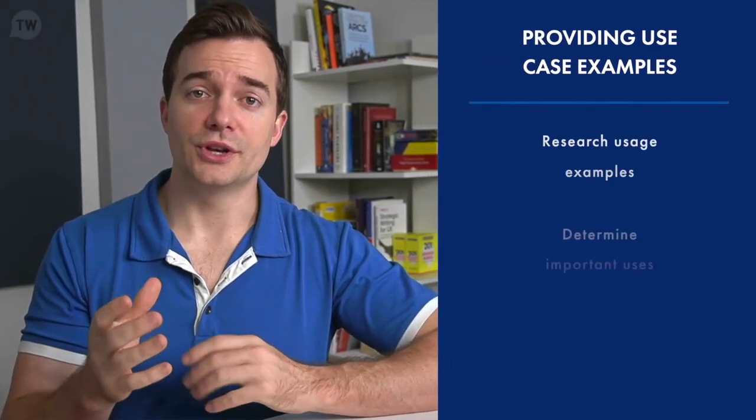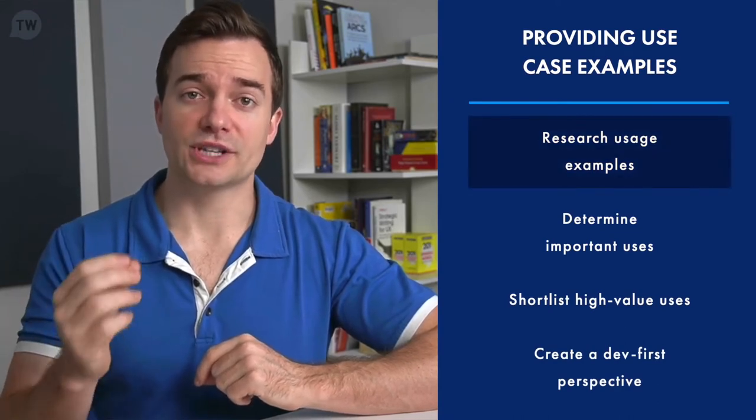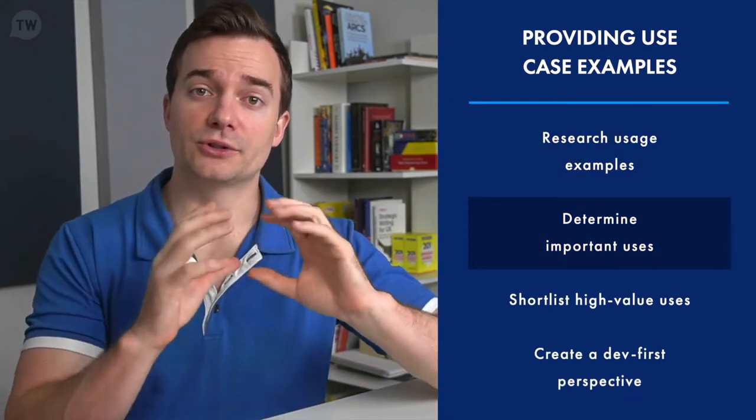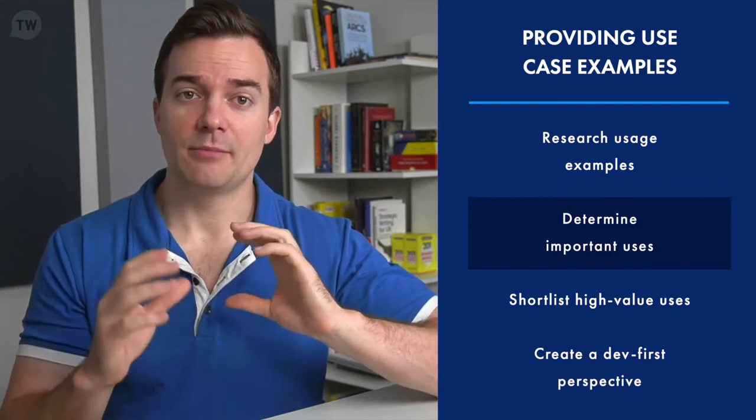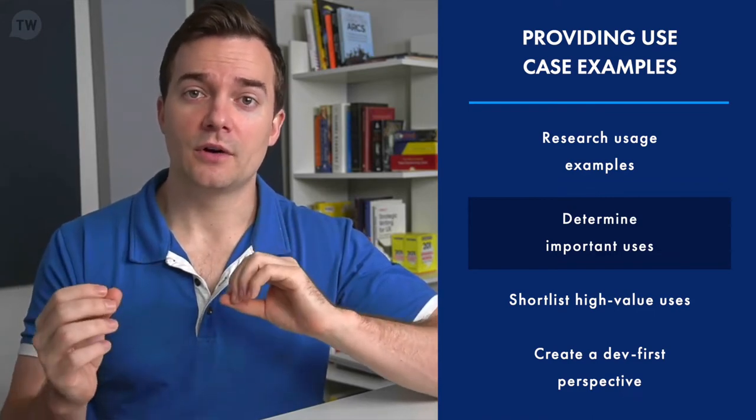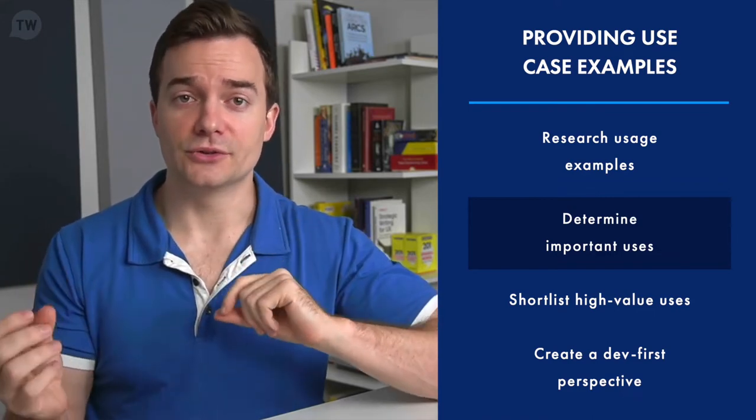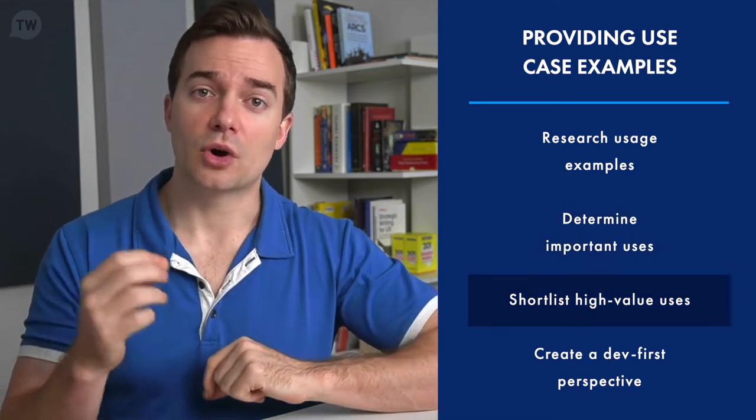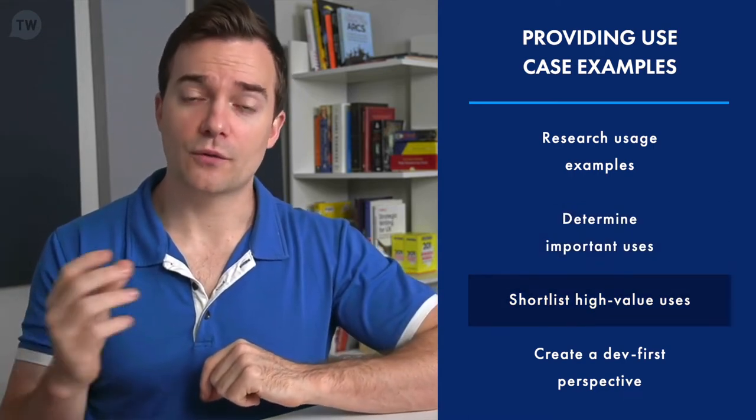In order to do this, writers will research common usage examples for their type of API. They'll also determine the most important use cases among them, based on how big a problem they solve on the end product for the end user. And then they'll shortlist the more high value API feature uses for developers.